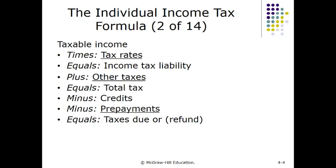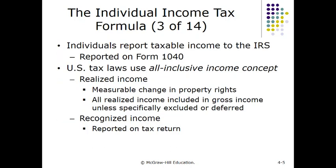From total taxes, you subtract credits and prepayments — such as withholding and estimated tax payments if you're self-employed. That will either equal tax due if you're underpaid, or a refund if you're overpaid. The form you use is Form 1040, as shown in the book in Chapter 4, Page 4-3, Exhibit 4-2.